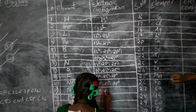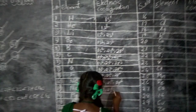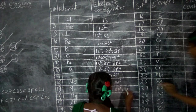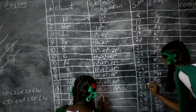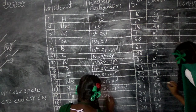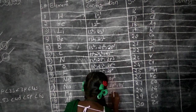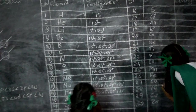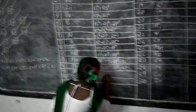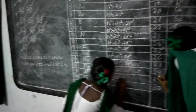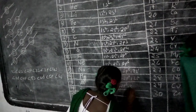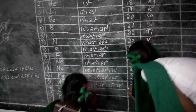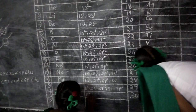1s2, 2s2, 2p6, 3s1. 1s2, 2s2, 2p6, 3s2. 1s2, 2s2, 2p6, 3s2, 3p1.